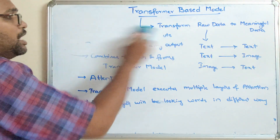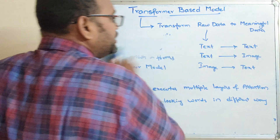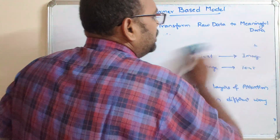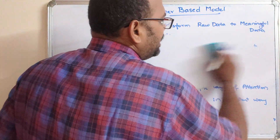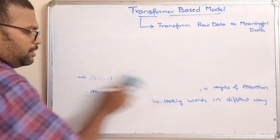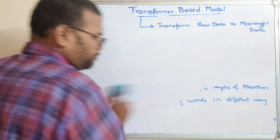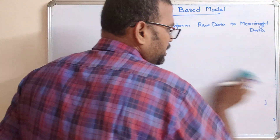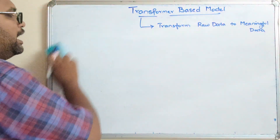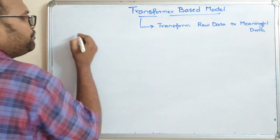So this is how the transformer-based model is executed — text or images are generated from the given prompts, based upon the attention mechanism.